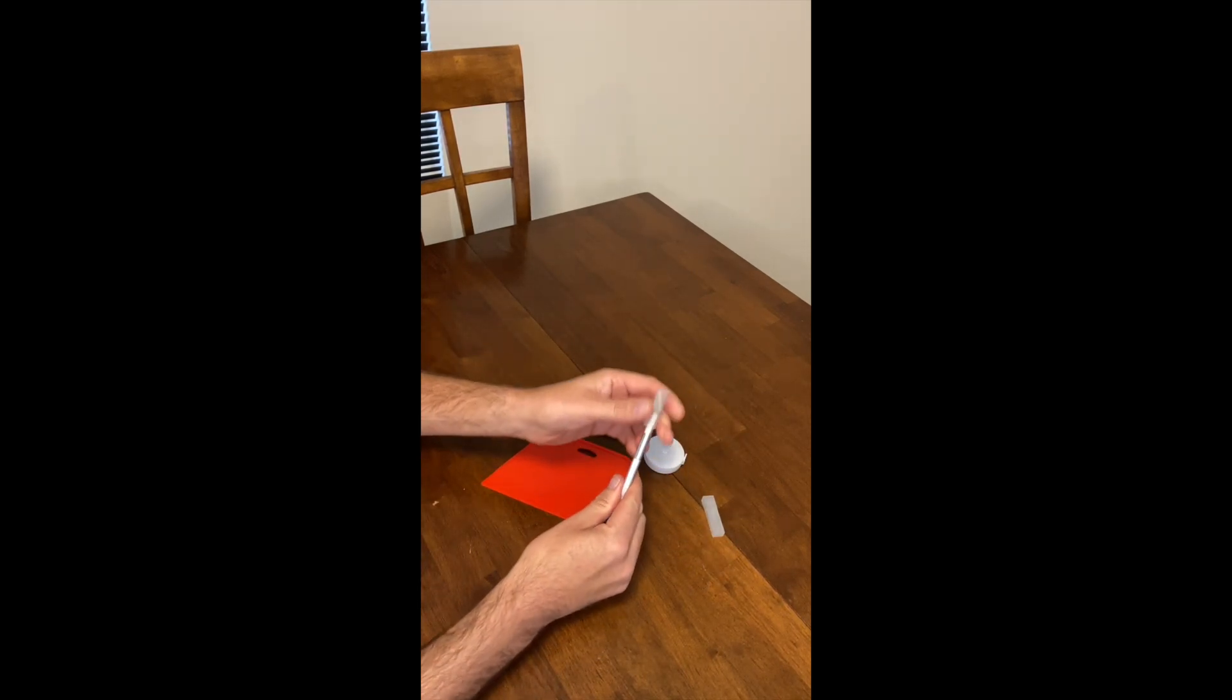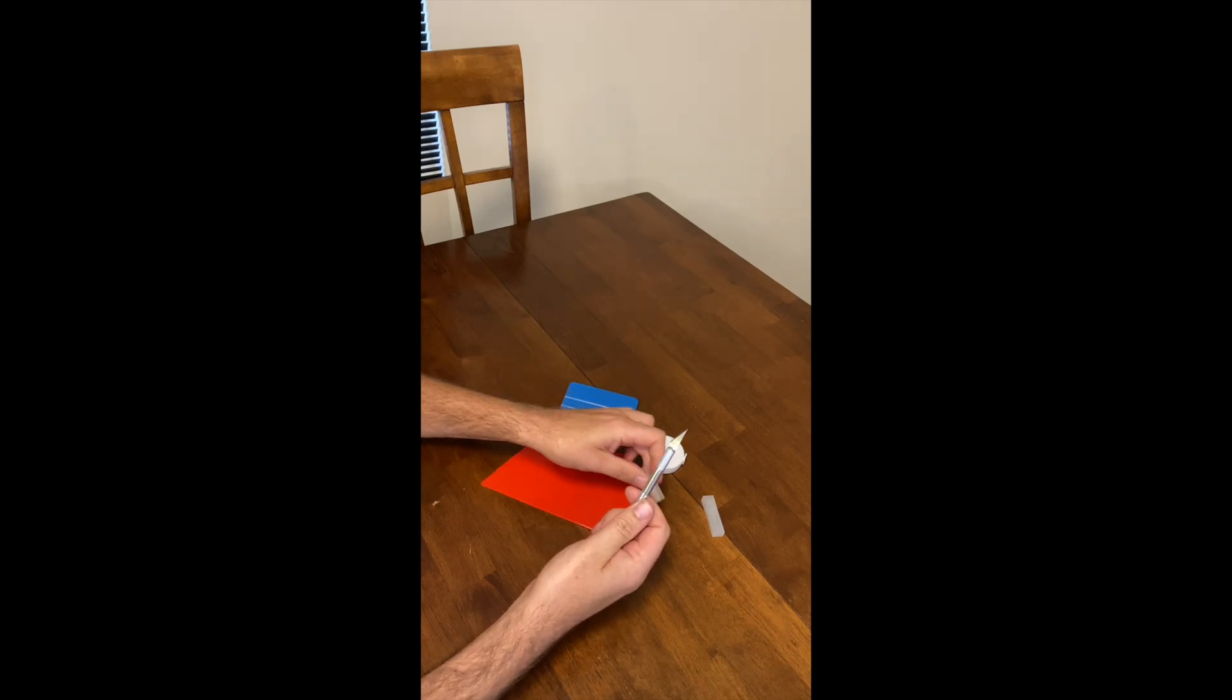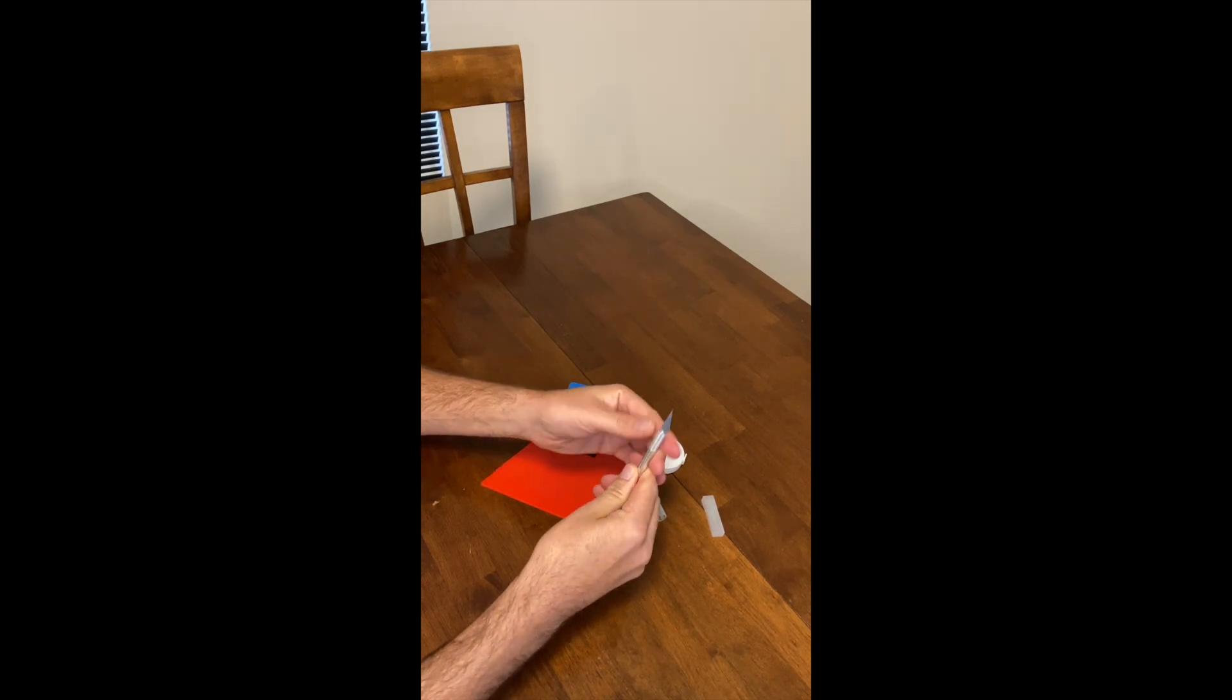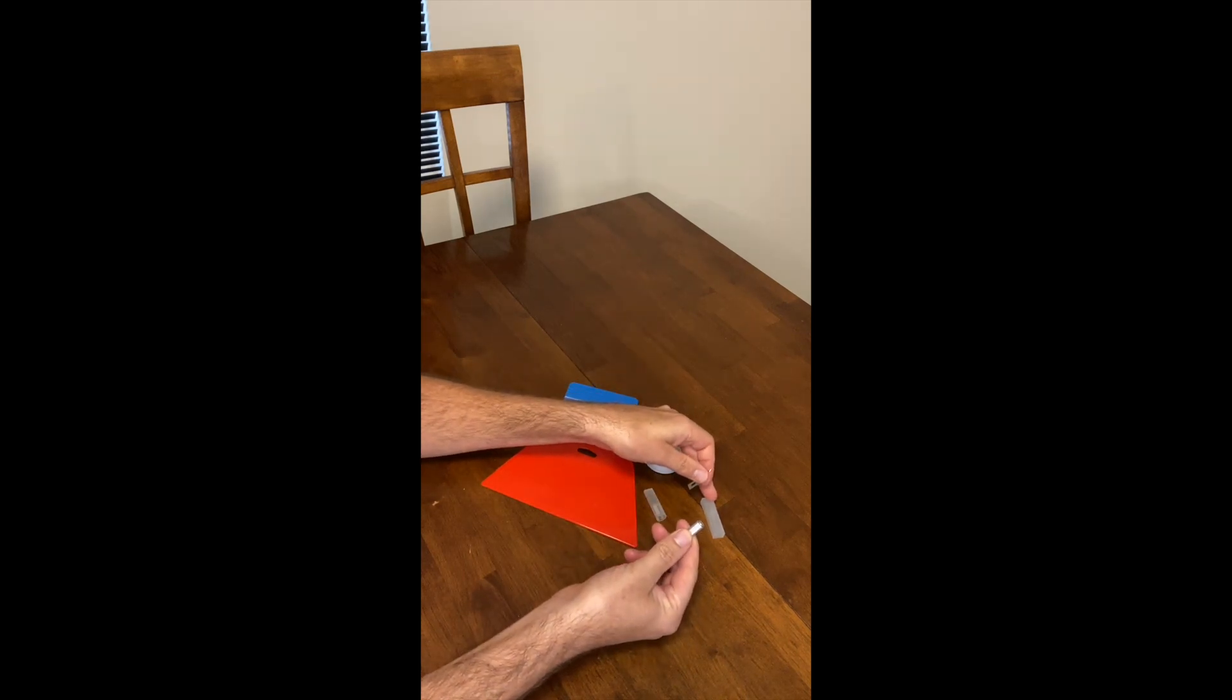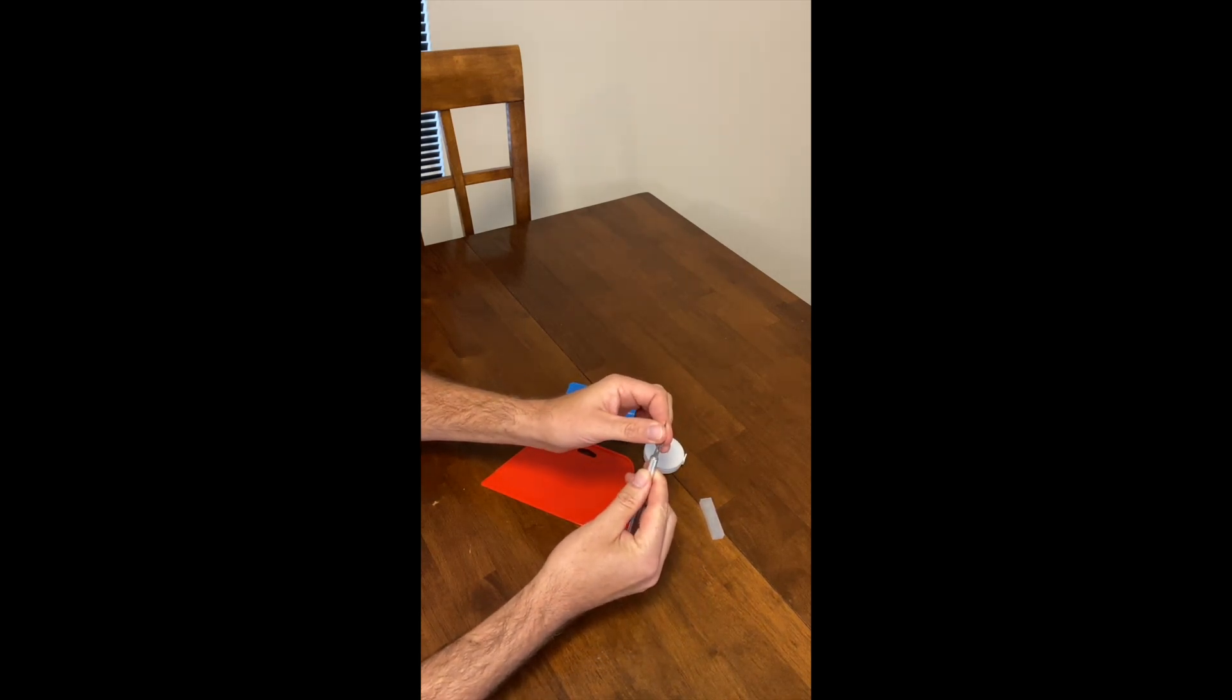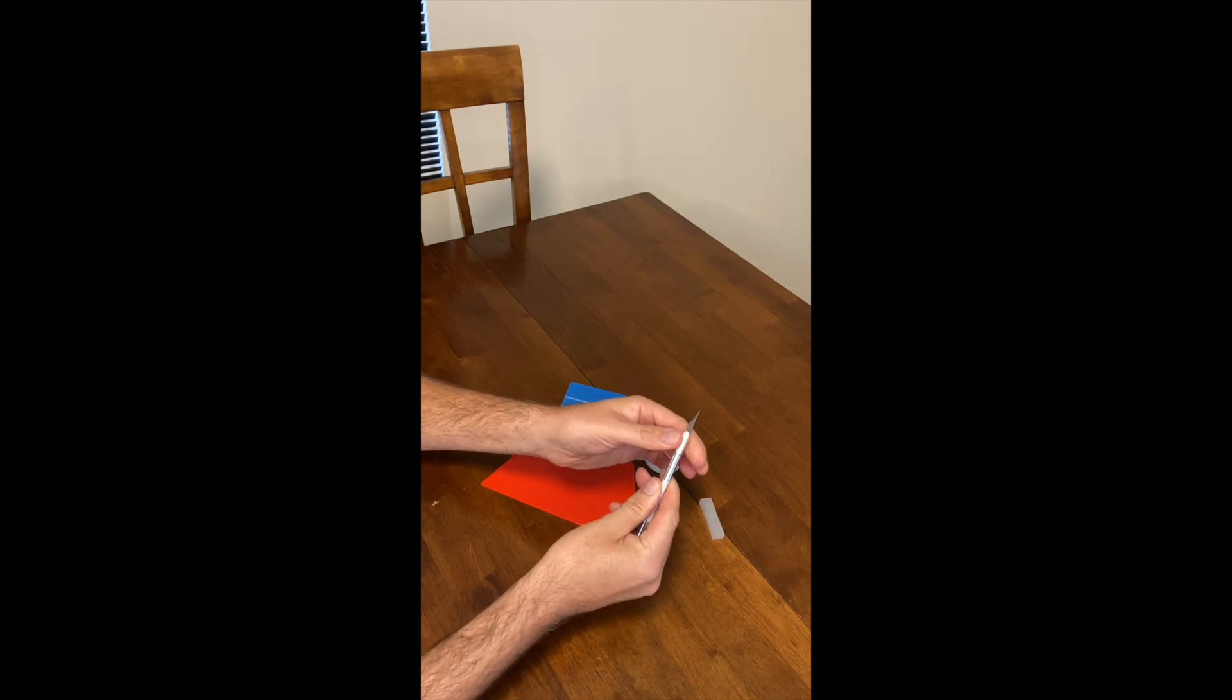This is what the knife looks like with the cover off. It's really sharp, so be careful. When I want to replace the blade, I just loosen this part, pull the blade off, take another one, put the blade on like this, and then tighten this part right here.